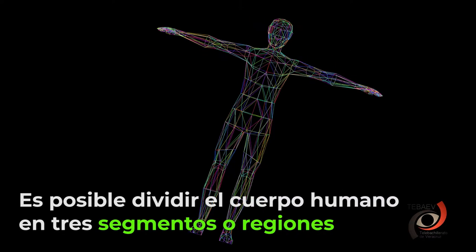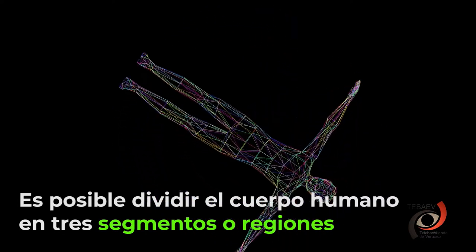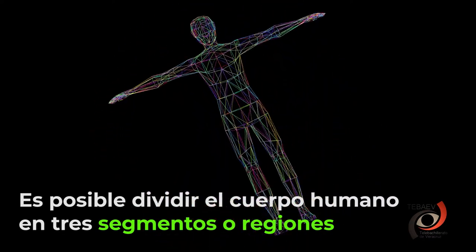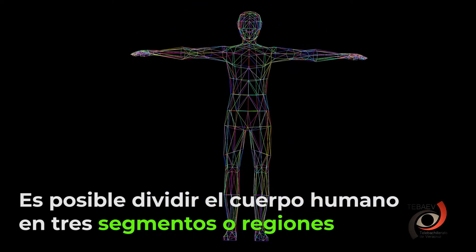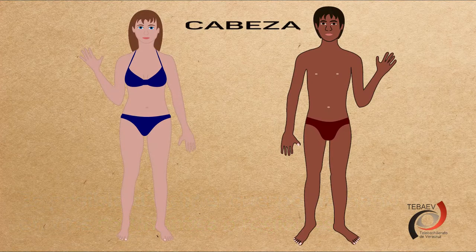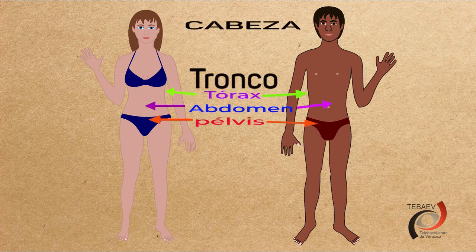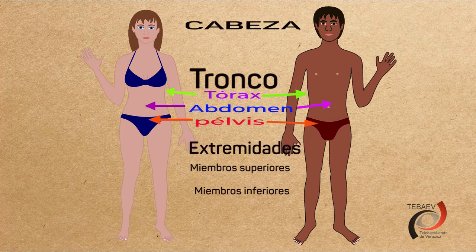A simple vista, es posible dividir el cuerpo humano en tres segmentos o regiones principales. Estos son la cabeza, el tronco, que se conforma por el tórax, el abdomen y la pelvis, y las extremidades superiores e inferiores.